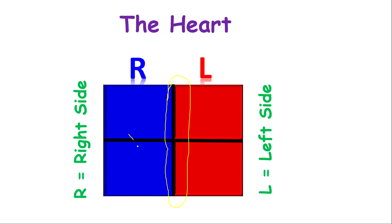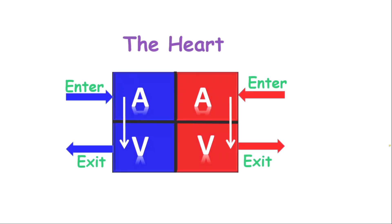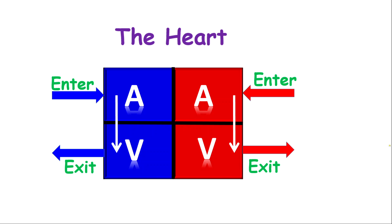The upper and lower chambers are separated by valves, and the right and left are separated by the septum. Blood will enter the heart through the atria — only the upper chambers receive blood. Blood will leave the heart through the ventricles — only the lower chambers push blood out. When the muscles of the lower chambers contract, blood flows outside of the heart.